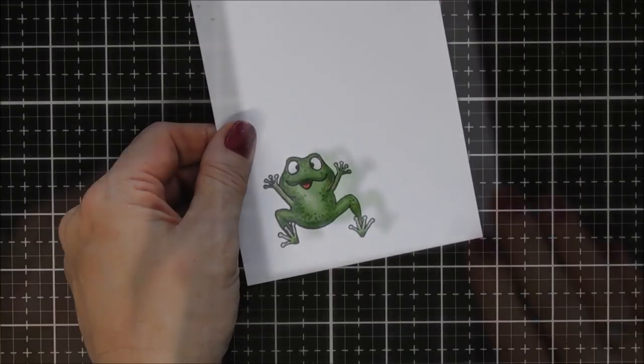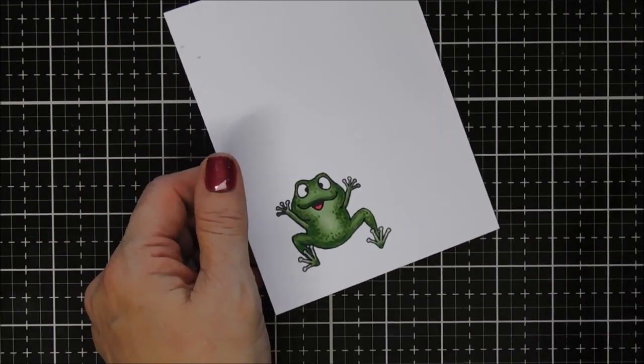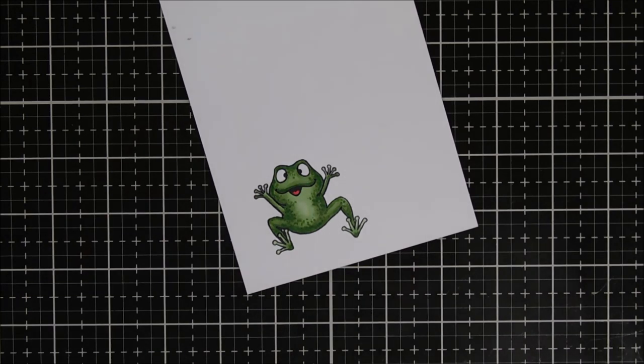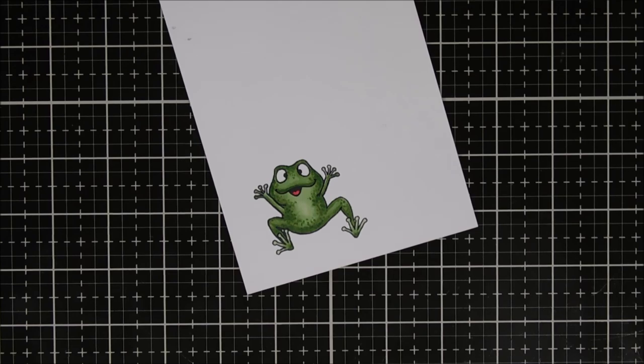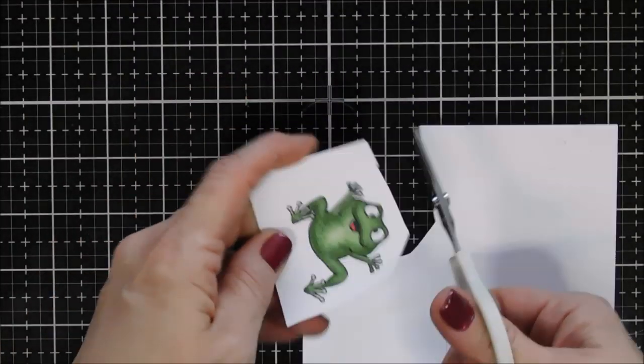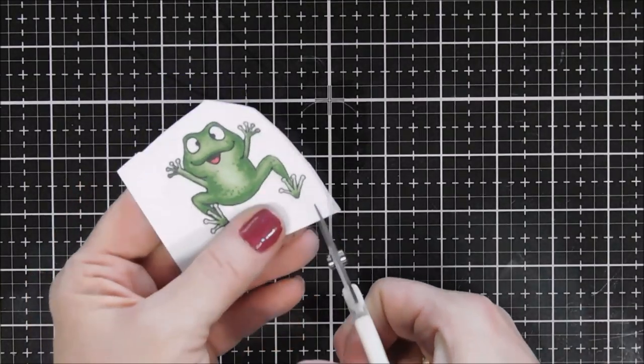Okay coloring is all done. I did take my darker shade of green and I added little dots of detail and I think you'll be able to see him more in the close-up pictures but I just think it adds a lot of texture to this little guy.